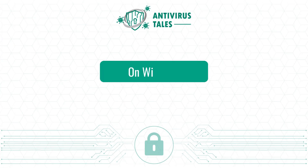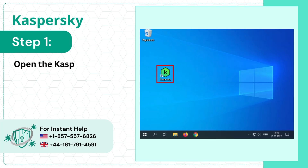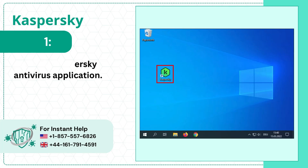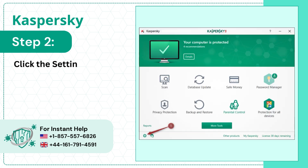On Windows. Step 1: Open the Kaspersky Antivirus Application. Step 2: Click the Settings icon on the bottom left side of the screen.